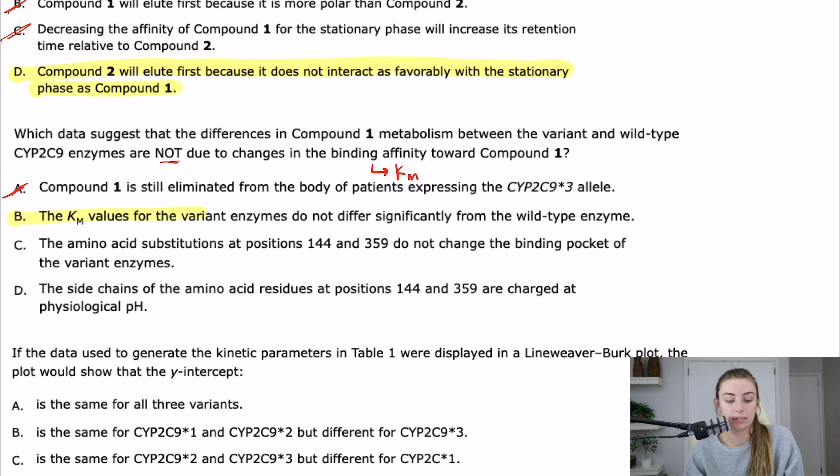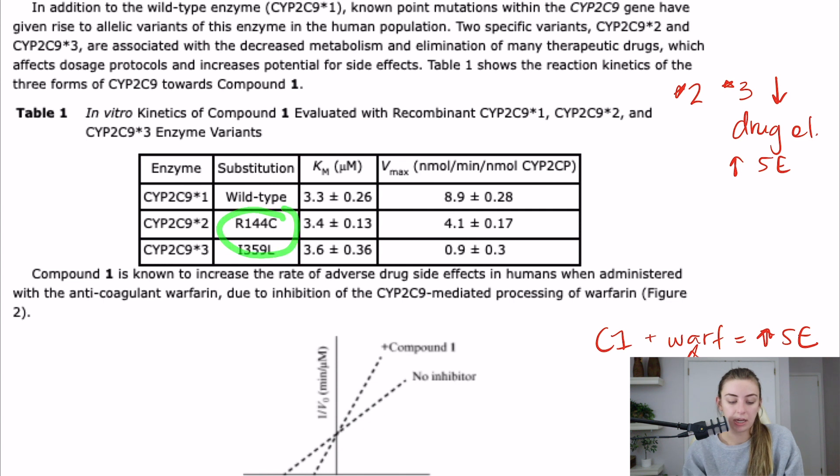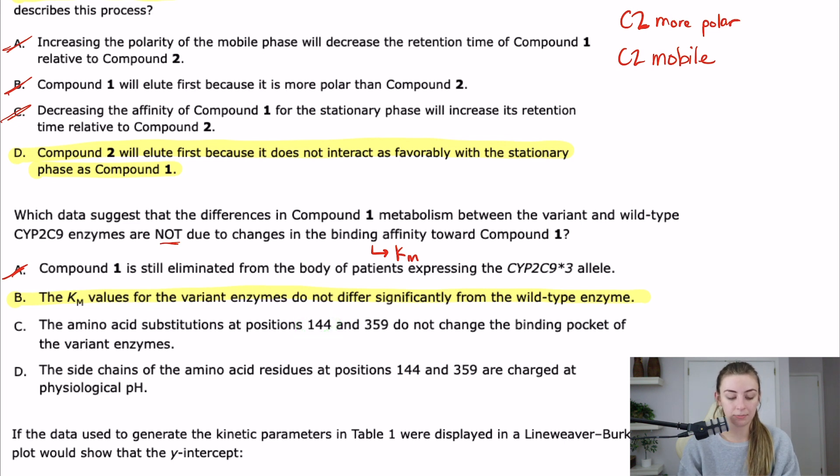C says the amino acid substitutions at position 144 and 359 do not change the binding pocket of the variant enzymes. So let's go back up and see. This is what they're talking about. Would a change from arginine to cysteine change anything? I would think so because arginine is a basic amino acid and cysteine is not. So I would expect a change there. The difference between isoleucine and leucine is not that different. So I might not see a change there. But regardless, position 144 would have a change in the binding pocket. D says the side chains of the amino acid residues at positions 144 and 359 are charged at physiological pH. We already talked about isoleucine and leucine at 359. And we know that those are not charged amino acids. So that's not true. B is our best answer here.